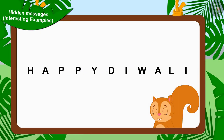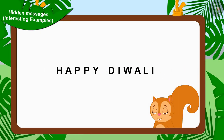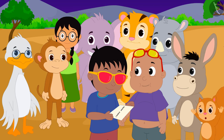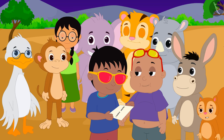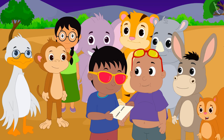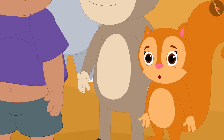Chanda solved Jeev's hidden message by writing all the alphabets together and shouted out the message to all the villagers: 'Happy Diwali! Happy Diwali!'